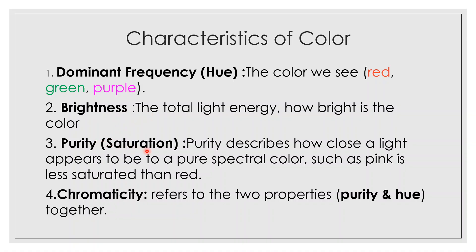Next is purity, or saturation. Purity describes how pure a color is. Pure red is fully saturated. Pink is less saturated than red. Purity describes how close a light appears to be a pure spectral color. A fully saturated color is a pure color, while varieties mixed with white are less saturated.